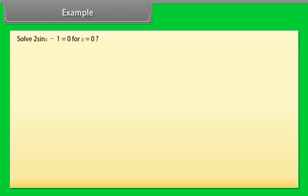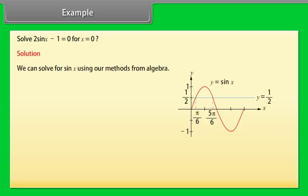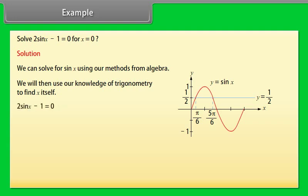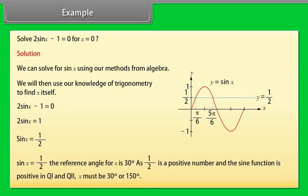Example: Solve 2sin x − 1 = 0. Using algebra: 2sin x = 1, so sin x = 1/2. The reference angle is 30 degrees. Since 1/2 is positive and the sine function is positive in quadrants 1 and 2, x must be 30 degrees or 150 degrees.